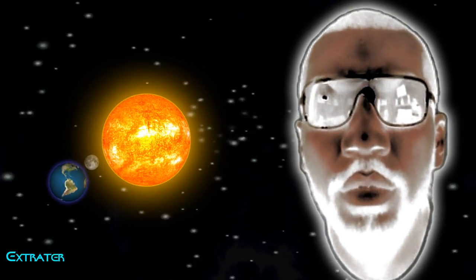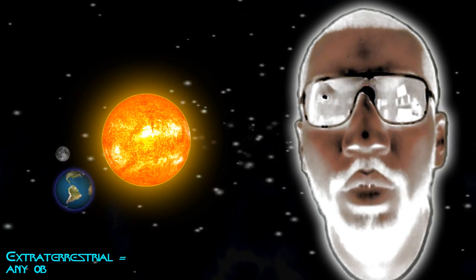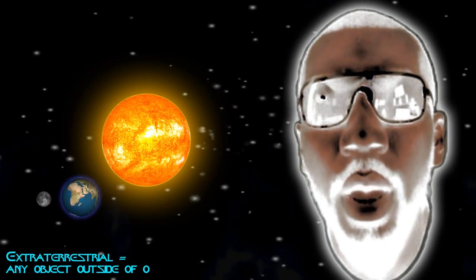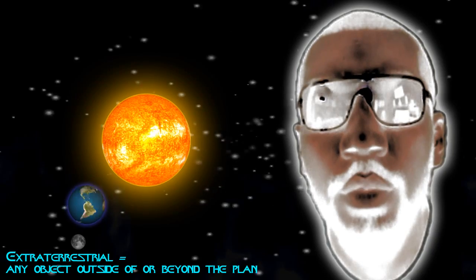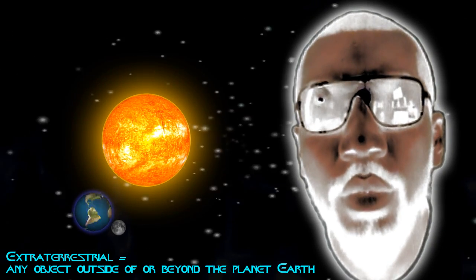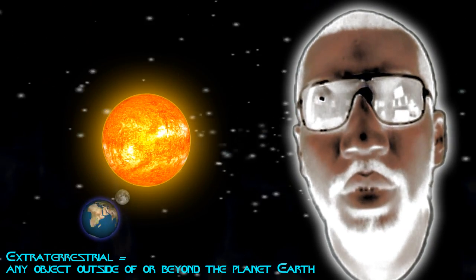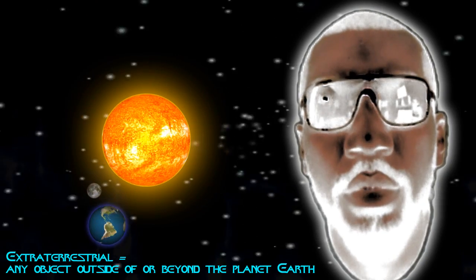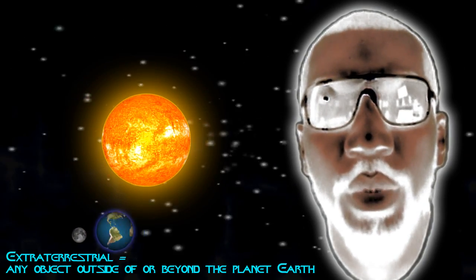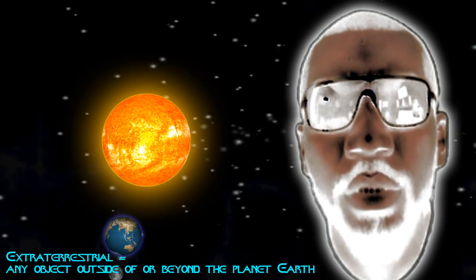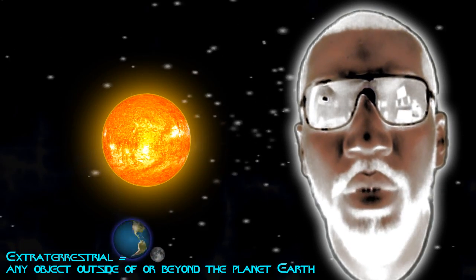The word extraterrestrial refers to anything outside of the planet Earth. Therefore, by this definition, the sun is an extraterrestrial being because it is outside or beyond the planet Earth.